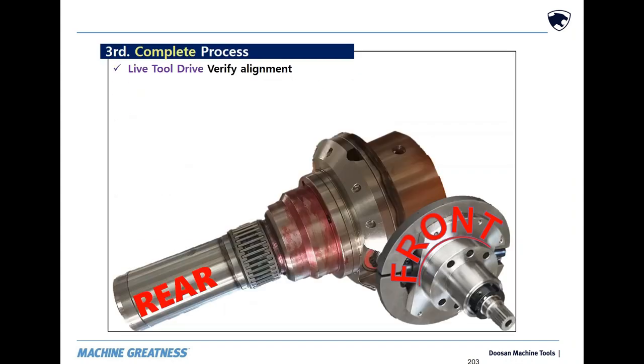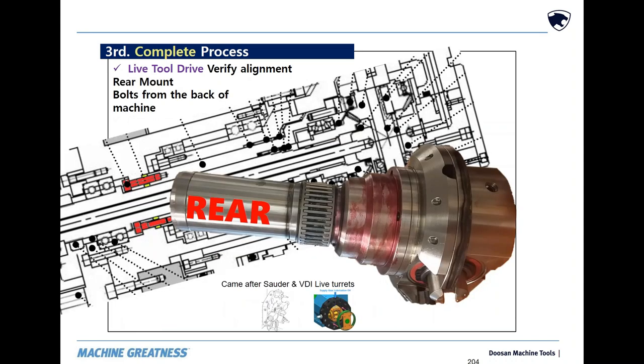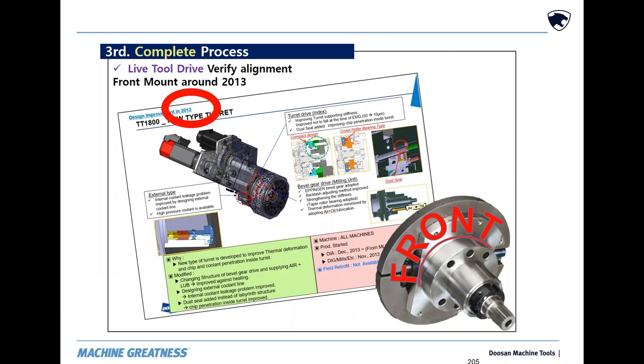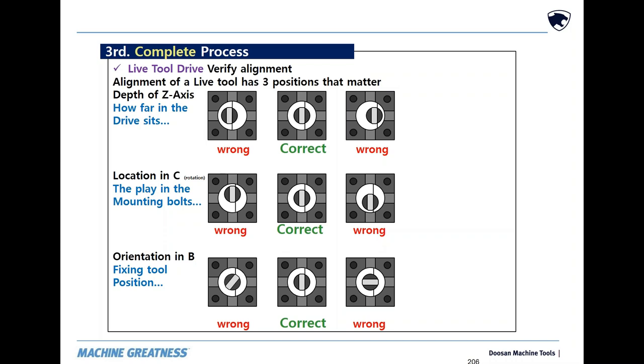Starting with the live tool drive alignment. The rear mount live tool has mounting bolts that pass through the chassis from the back and into the spacer in the drive at the front. In late 2013, the turret was redesigned, establishing the use of cross roller bearings, improving coolant management, and adding a front mounted live tool with air oil. Both the front and rear drives have three positions that matter. Misalignment of any of these positions could destroy the drive.